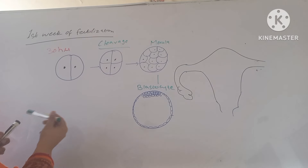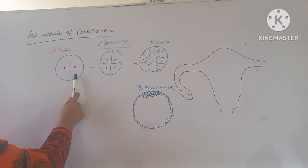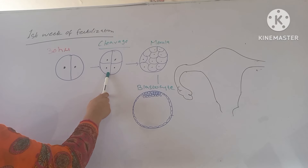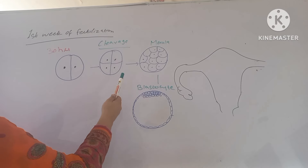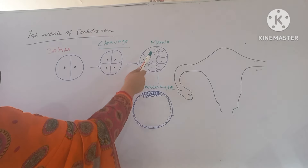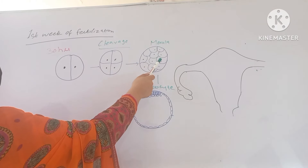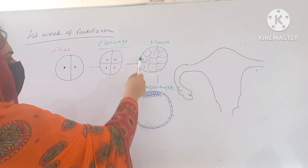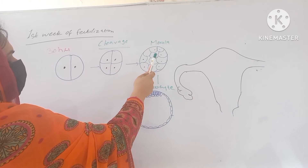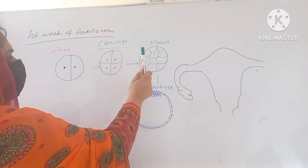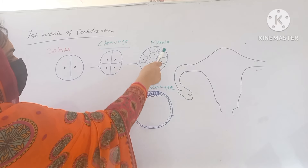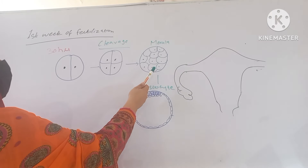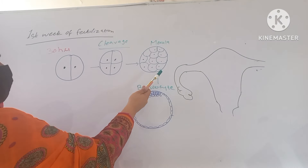Firstly, the zygote is in the 2-cell stage, then 4-cell stage, and as the time passes, the blastomeres or the small cells are mitotically dividing. The space is limited, but the cells become smaller and smaller to occupy the limited space. Thus, this process is known as the compaction.